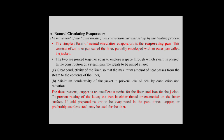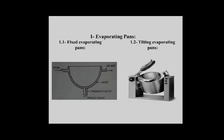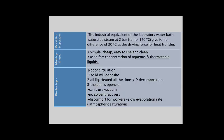The two are joined together so as to enclose a space through which steam is passed. The evaporating band may be fixed or tilting. Advantages: it is simple, cheap, easy to use and clean, and is used for concentration of aqueous and chemically stable liquids. Disadvantages: poor circulation, solids deposit, all liquid is heated all the time increasing risk of decomposition, the band is open so vacuum cannot be used, no solvent recovery if the solvent is expensive, worker discomfort, and slow evaporation rate.